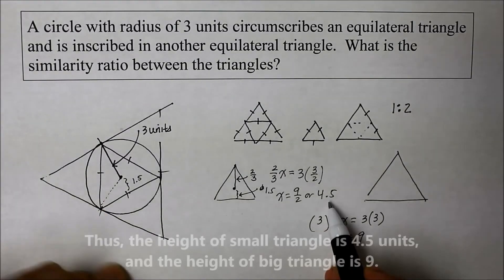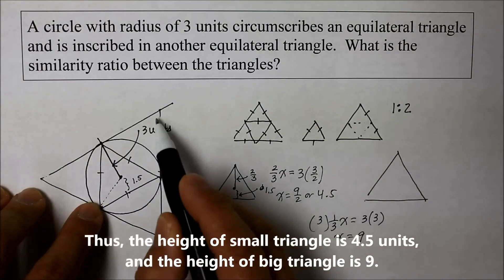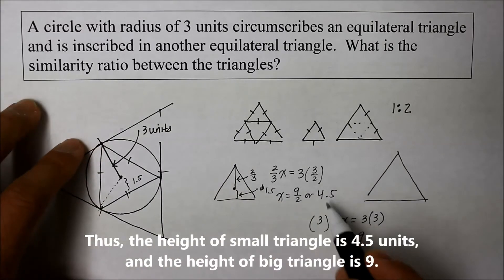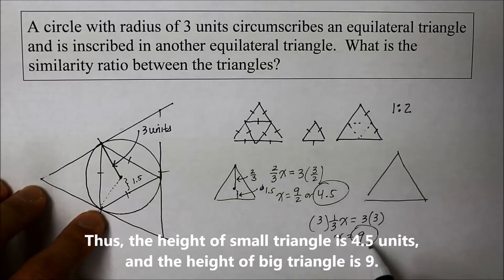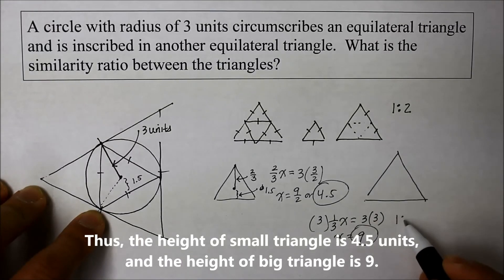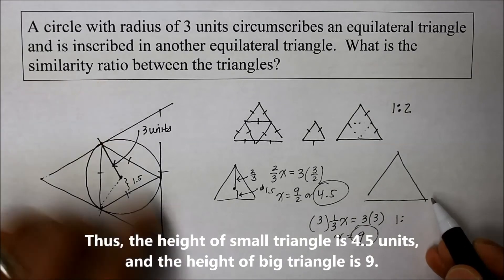So look what we have. The full distance of the median, the segment of a smaller triangle, is four point five. And the median of a bigger triangle is nine. So it shows you once again that it is a half of the bigger one, and it is the similarity ratio of one to two.